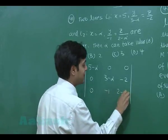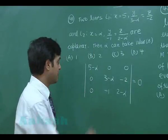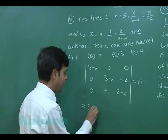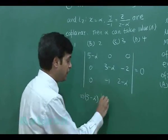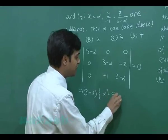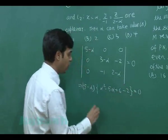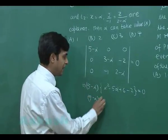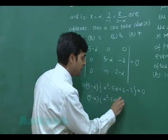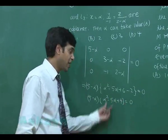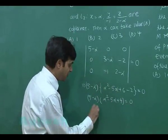The direction ratios for the first line: 0, (3-α), -2. For the second line: 0, -1, and (2-α). This determinant must be zero. Simplifying gives (5-α)[(3-α)(2-α) - 2] = 0, or (5-α)[α² - 5α + 4] = 0. This can be factorized as α = 1 and α = 4.